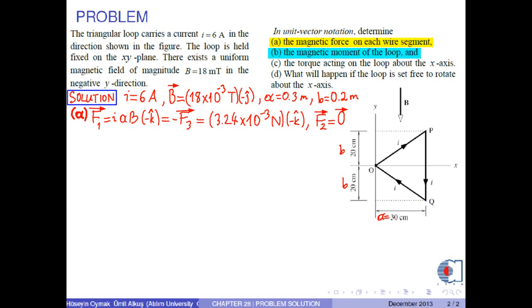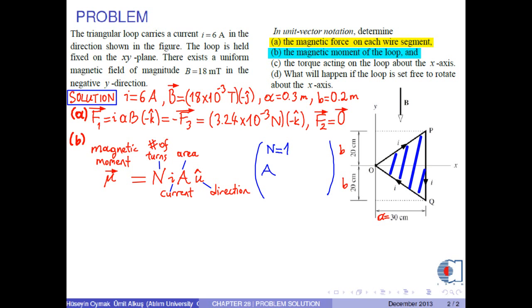B. Determine the magnetic moment of the loop. Magnetic moment, denoted by mu, has the formula N times I times A U-hat. Where N is the number of turns, I is the current, A is the area, U-hat is the direction. Here, we have just one turn. The area of the triangle is 2B times A over 2. So, B times A.